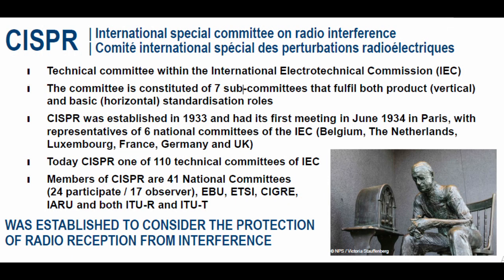What is exactly CISPR and what is the meaning of CISPR? CISPR is a German abbreviation — it stands for Comité International Spécial des Perturbations Radioélectriques, which means International Special Committee on Radio Interference. CISPR is a technical committee within the International Electro-Technical Commission (IEC), and it is constituted of seven subcommittees that fulfill both product vertical and basic standardization roles.